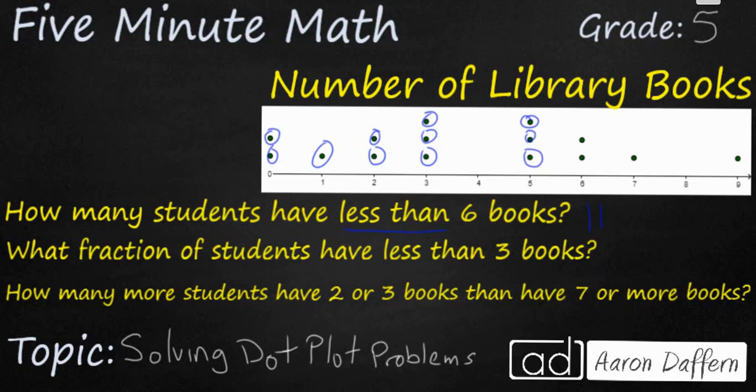Next, what fraction of students have less than three books? Well, our fraction, we have a total of 15 students and less than three is going to be looking at this group right here. One, two, three, four, five. So five fifteenths. But that can be reduced to one third.